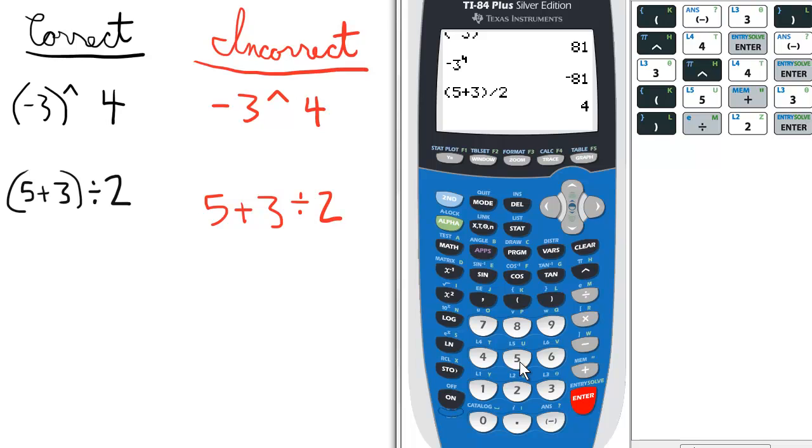However, lazily disregarding the use of parentheses, 5 plus 3 divided by 2 this way, the calculator will give you 6.5, which is 5 plus 3 halves, or 3 divided by 2, and then add 5.